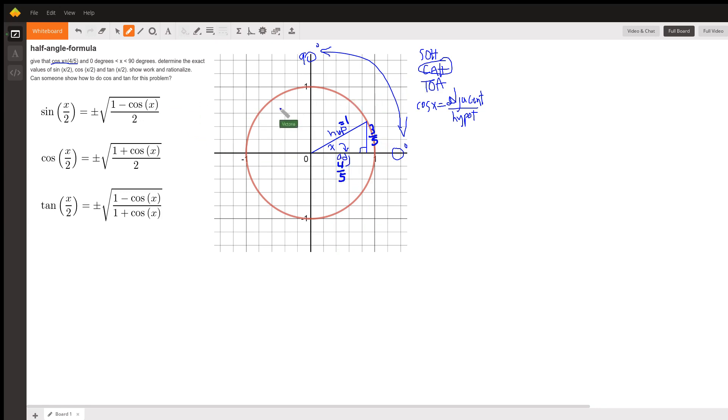Now, if you need the sine of x, well, it's the opposite over 1, which is the hypotenuse, which is just 3 fifths.